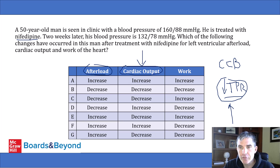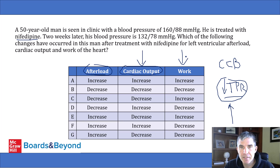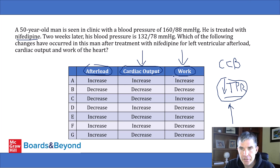So afterload goes down after nifedipine and cardiac output goes up. For work of the heart, when there's less peripheral resistance, there's less resistance to blood flow out of the heart, so the heart has to do less work. The correct answer is that nifedipine decreases afterload, increases cardiac output, and decreases work of the heart — Answer choice D.